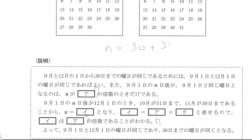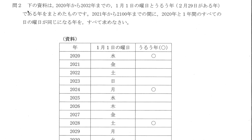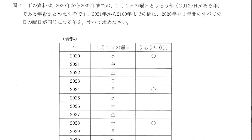9月1日のN日後が12月1日のとき、10月が31日まで、11月が30日まであることからNイコール91となり、91はアかけるウと表せます。IはAの倍数であることが分かります。N = 30 + 31 + 30 = 91, and 91 = 7 × 13. So the answer for I is 91 and U would be 13. よって9月1日と12月1日の曜日が同じであり、30日までの曜日が同じとなります。